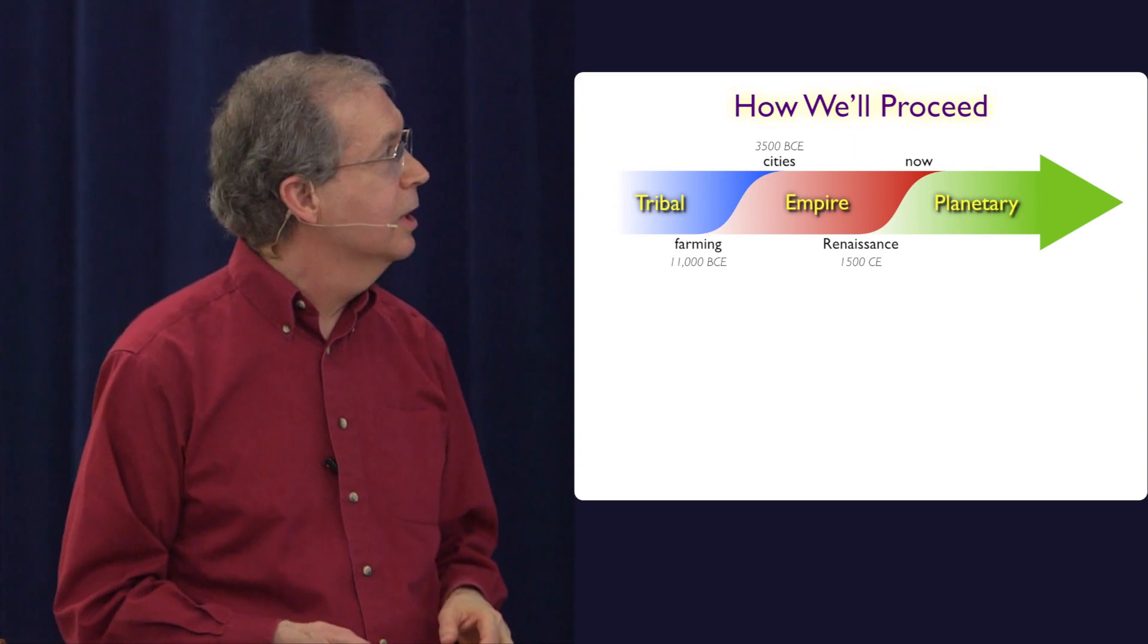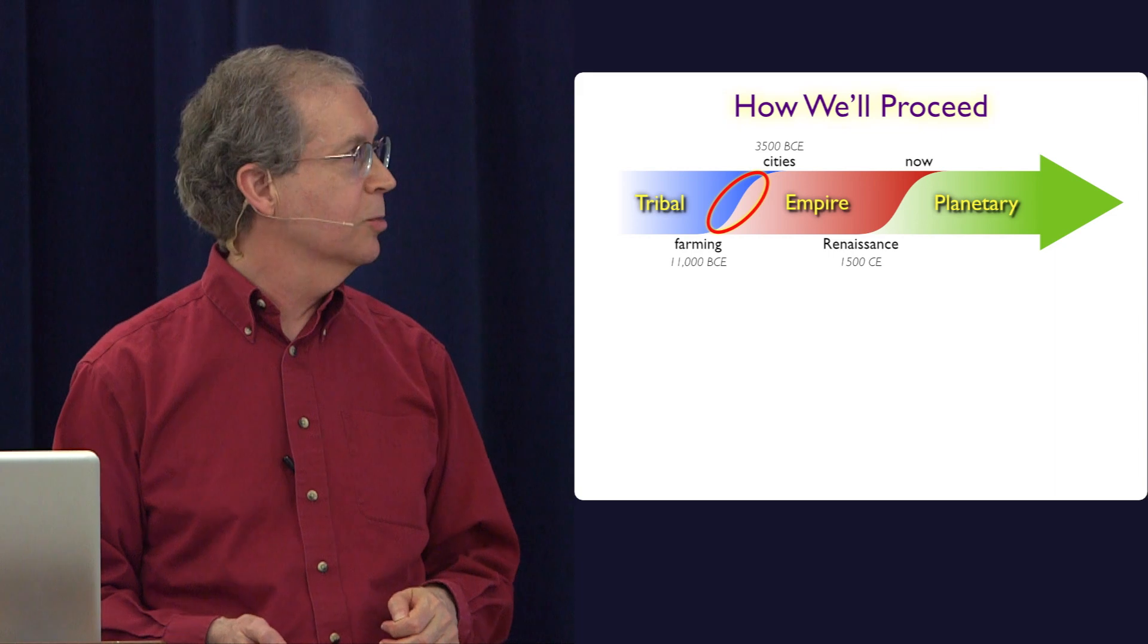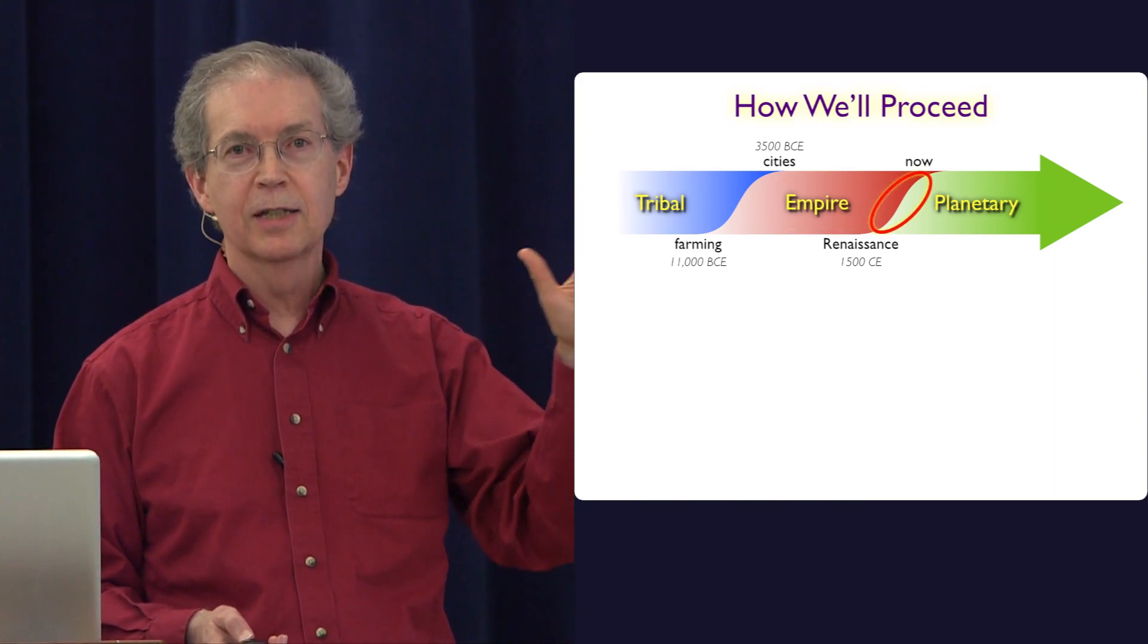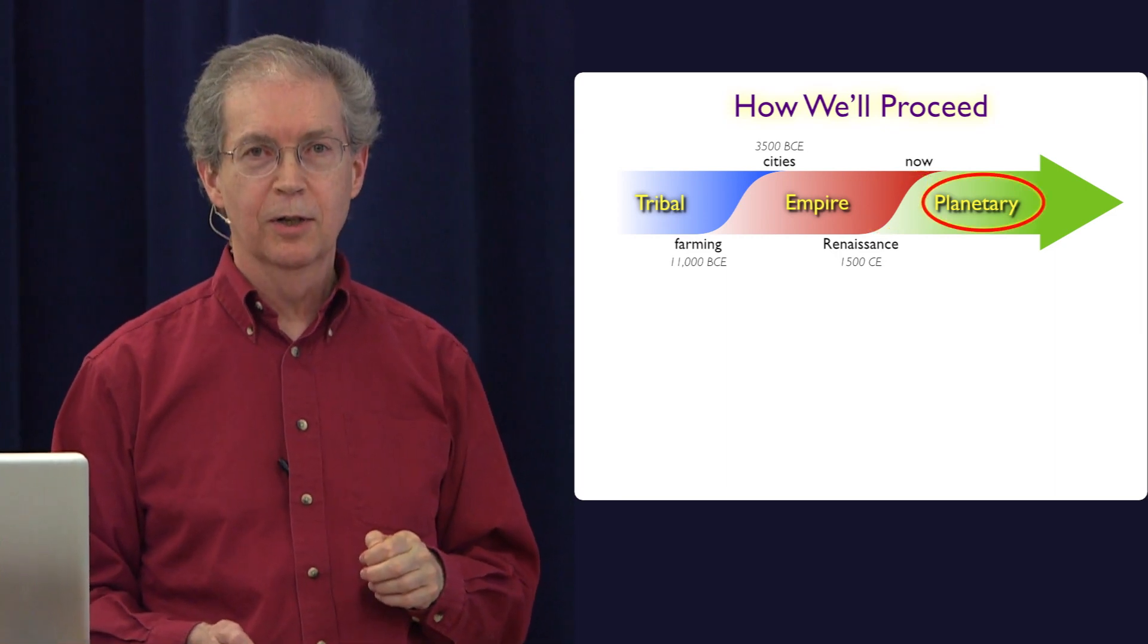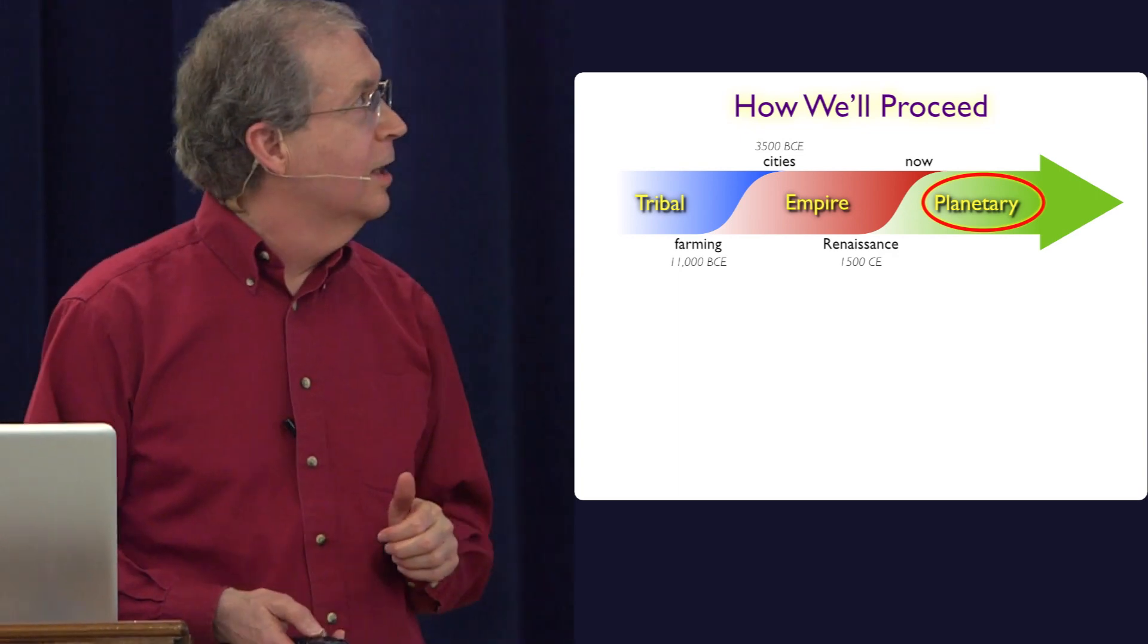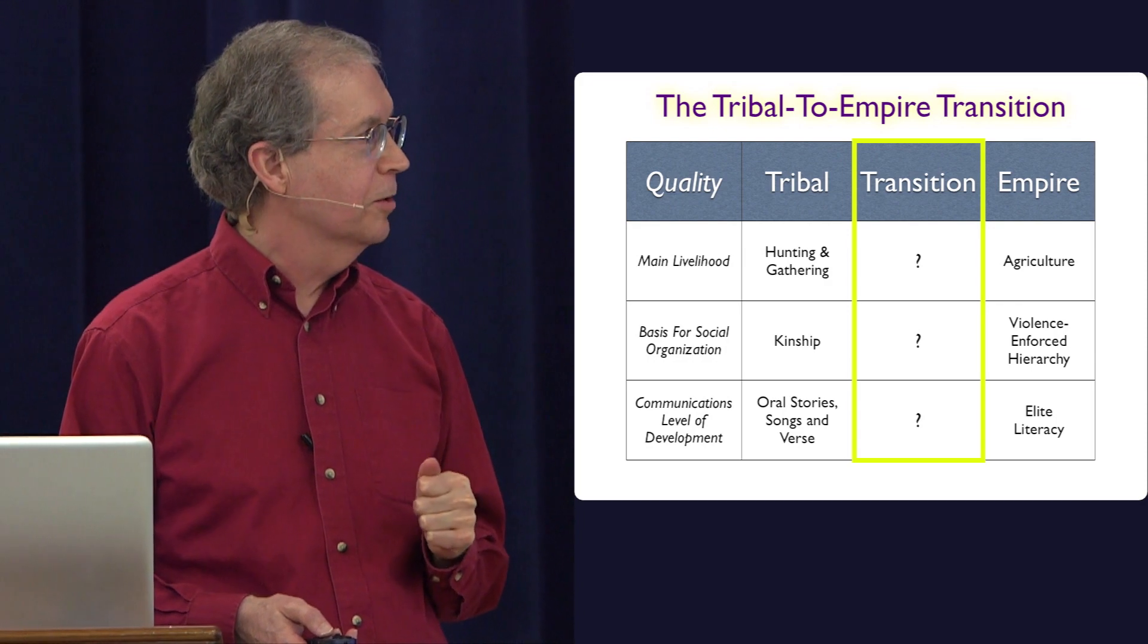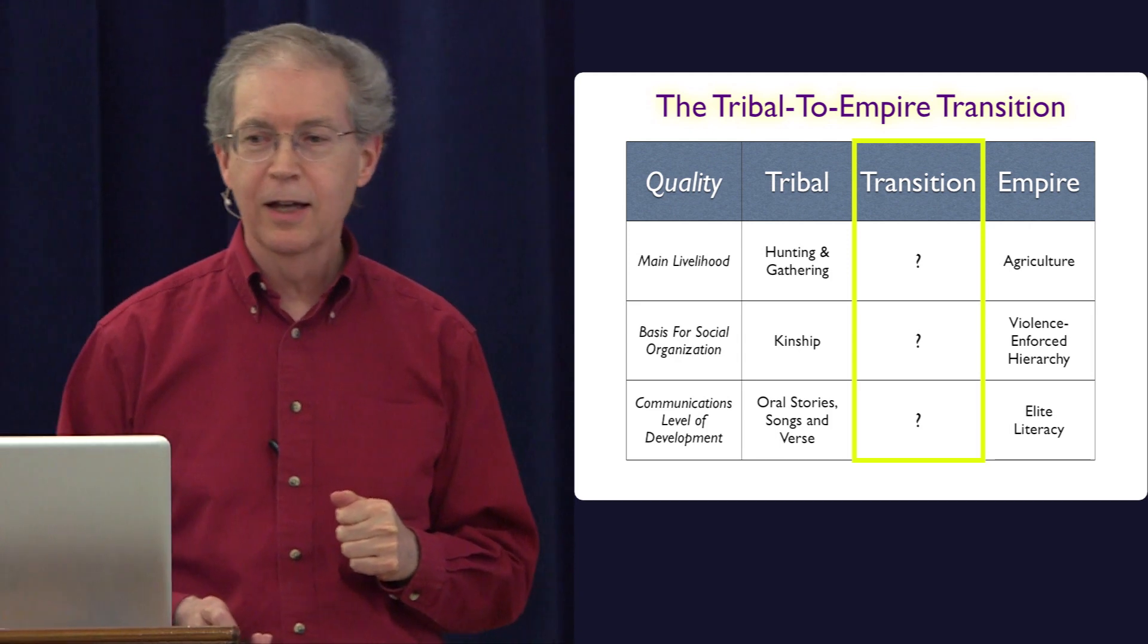So the way we're going to proceed is we're going to start by looking at the first transition and try to understand what are its big characteristics. Then we'll look briefly at the empire era. Then we'll move on to the empire planetary transition as it's gone so far. And then we'll move to the planetary era. So tribal to empire transition. So we're moving from hunting and gathering to agriculture. From kinship to violence-enforced hierarchy. From orality to elite literacy. How did that happen? Let's focus first on the main livelihood.